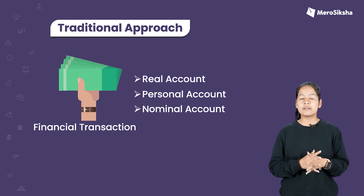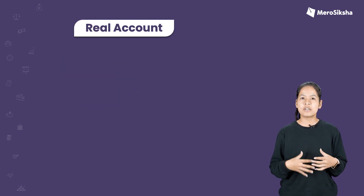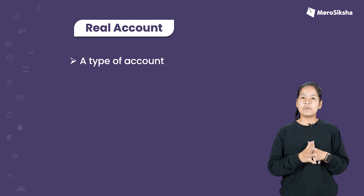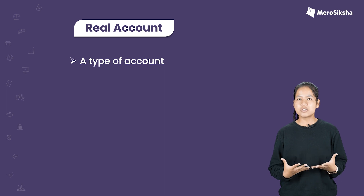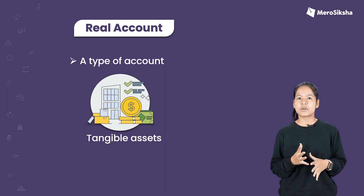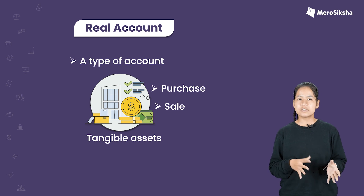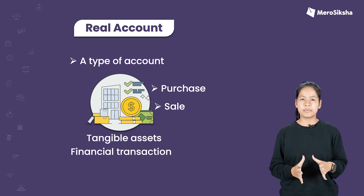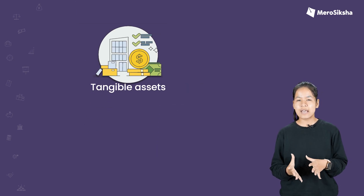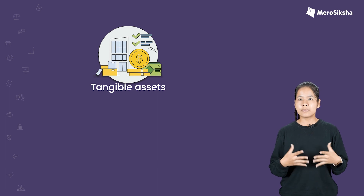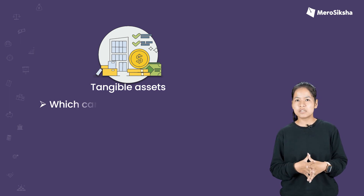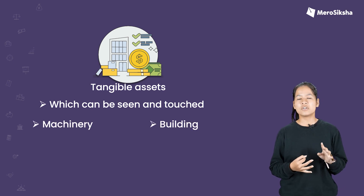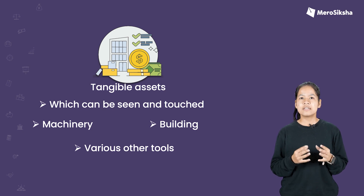First, what is a real account? A real account is where we deal with various tangible assets. We also deal with various intangible assets, like purchases, sales, etc. Tangible assets are those types of assets that you can see and touch — for example, machinery, buildings, and various tools.